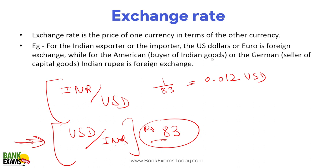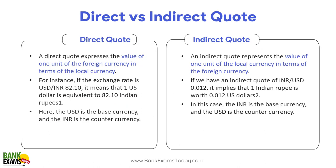For an Indian exporter or importer, the US dollar or euro are foreign — that's foreign exchange. For Indians, INR is the local currency. So what is direct and indirect quotation? Very important for your exam. A direct quotation expresses the value of one unit of foreign currency in terms of local currency. For instance, if the exchange rate is 82 rupees per US dollar, that means 1 US dollar is equivalent to 82 rupees. Here US dollar is the base currency and INR is the counter currency — that is the direct quotation.